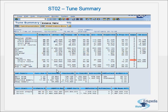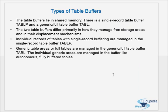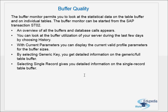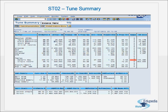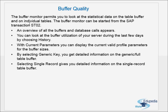All these things can be explored from ST02 — the tune summary. In this video we have learned the two types of table buffers: the single record table buffer and the generic table buffer. The other important thing is ST02, where we find various things like the buffer sizes, the hit ratios, the buffer qualities, and the free space in the buffers.